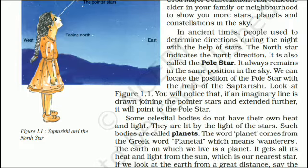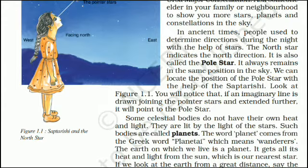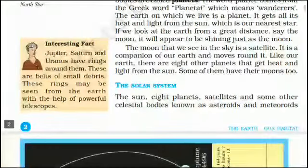Some celestial bodies do not have their own heat and light. They are lit by the light of the stars. Such bodies are called planets. The word 'planet' comes from the Greek word 'planete', which means wanderers. The Earth on which we live is a planet. It gets all its heat and light from the sun, which is our nearest star.